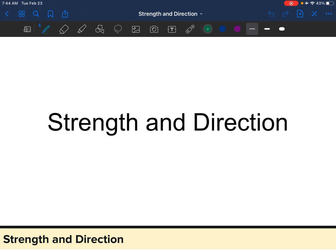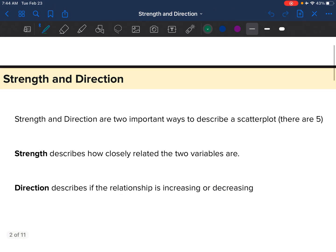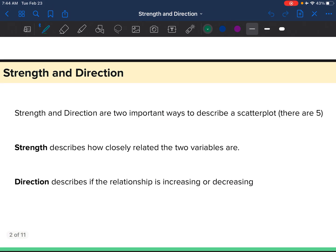This is a video to review strength and direction when describing a scatterplot. Strength and direction are two important ways that we can describe a scatterplot, and there are five in total.